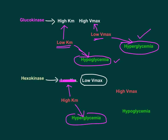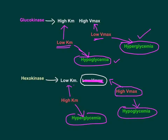If hexokinase Vmax changes from low to high while retaining low Km: because of low Km, the enzyme is highly active even at low blood glucose. With high Vmax, it has greater capacity and doesn't saturate early — more and more glucose is consumed and converted to glucose-6-phosphate from the circulation, giving rise to hypoglycemia.